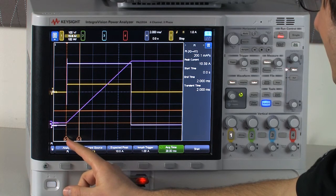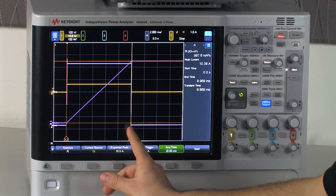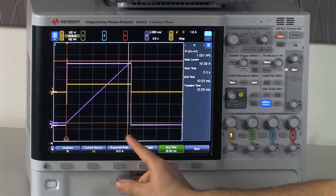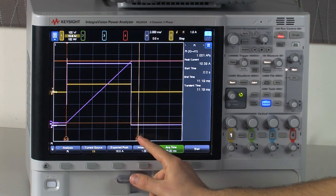So I'll go ahead and keep my X2 here at the start of the square pulse and move my X1 to the end of the square pulse. And you can notice as I change the cursor value, the sidebar numbers also update.